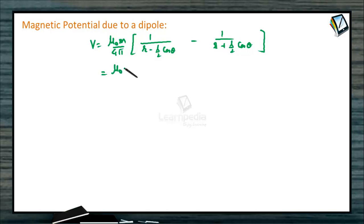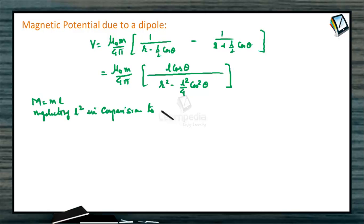It can be written as mu naught M by 4 pi into L cos theta upon, taking LCM, R squared minus L squared by 4 cos squared theta. Substituting capital M equals M into L and neglecting L squared in comparison to R.